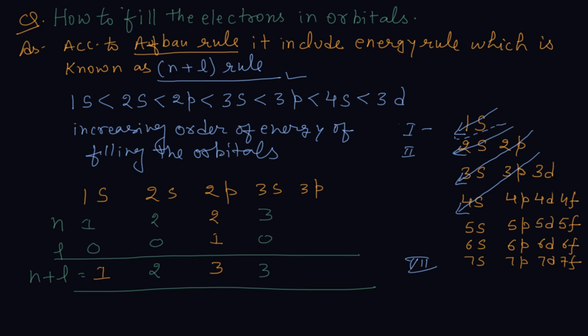When n+l values are equal, the electron goes to the orbital with lower n. That's why 2p comes before 3s. For 3p, n=3 and l=1, so n+l=4. For 4s, n+l=4+0=4. Again the totals are equal, but n is less for 3p.